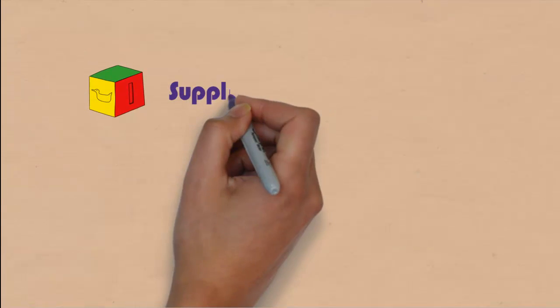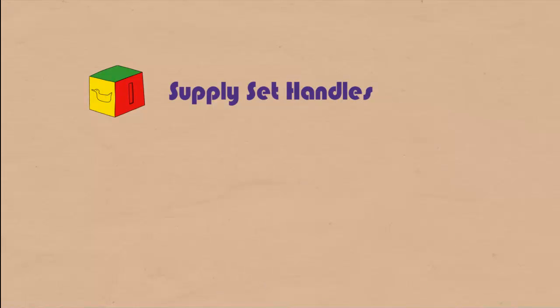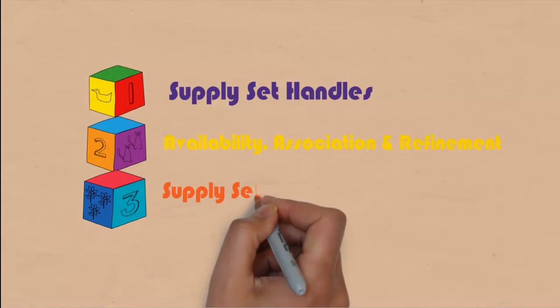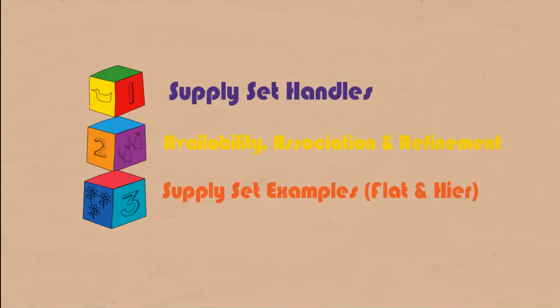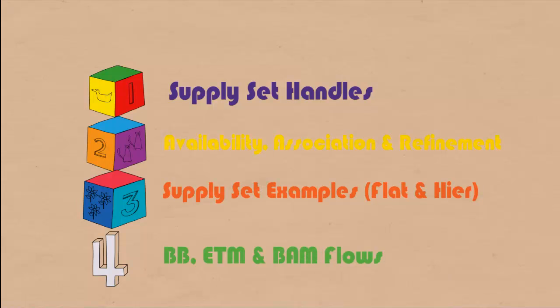Here's what we cover in this video series. We will talk about supply set handles and their availability, association and refinement. Show an example of flat and a hierarchical UPF using supply sets. And finally, describe the hierarchical flow using black box, ETM and block abstract models.